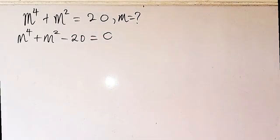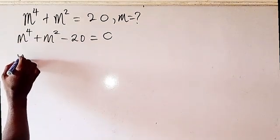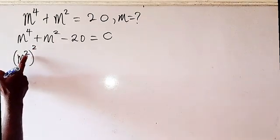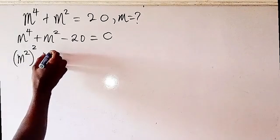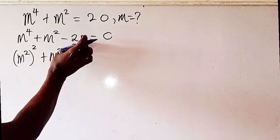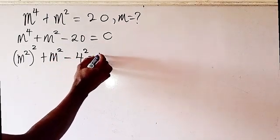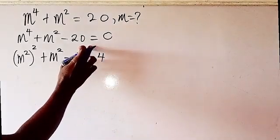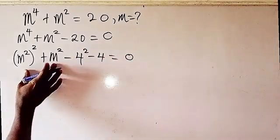From there, the next thing we are going to do is rewrite this as having m to the power of 2, all to the power of 2, because 2 times 2 gives us 4. We have m squared minus 4 squared, then minus 4, because minus 4 squared is minus 16, then minus 4, giving us 0.